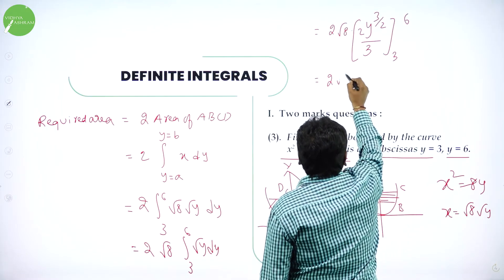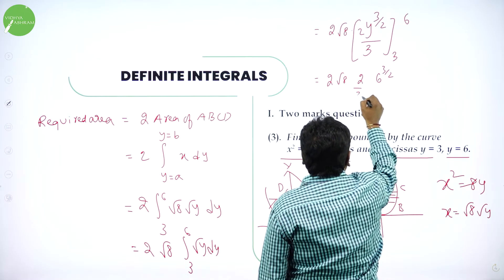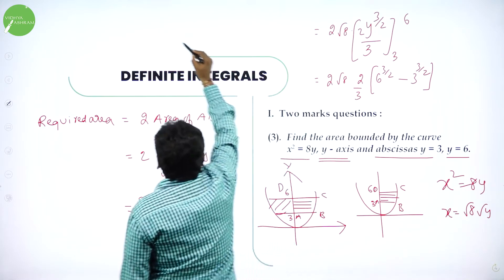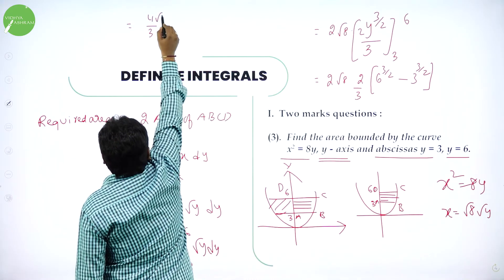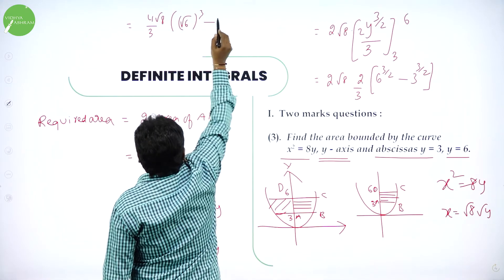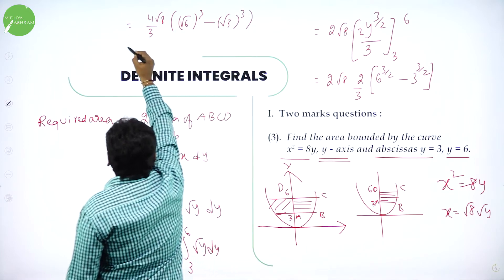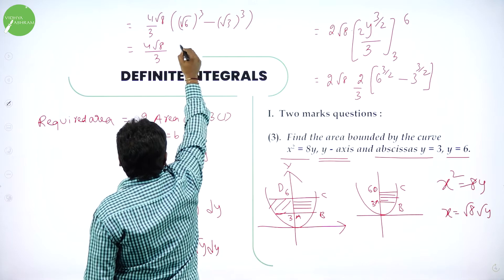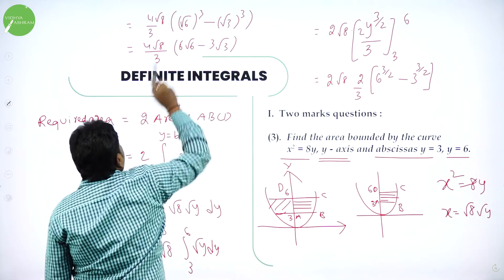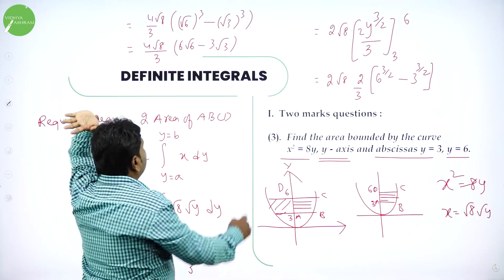Simplify: 2√8 × (2/3) × [6^(3/2) − 3^(3/2)] = (4/3)√8 × [(√6)³ − (√3)³]. This can be written as (4√8/3) × [6√6 − 3√3], and further simplified as (4√8/3) × √3(3√2·√3 − 3) or equivalent. You can simplify the root terms: 6√6 − 3√3, taking out √3 where applicable.